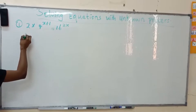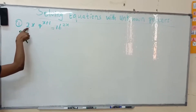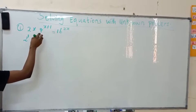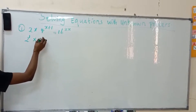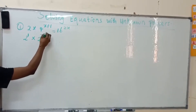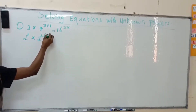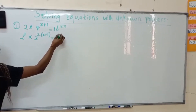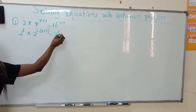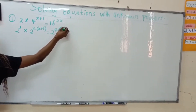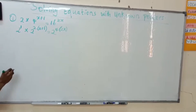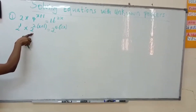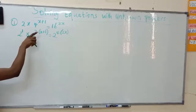We take base 2. That means 2 raised to the power of 1, and 2 raised to the power of 2 gives 4. In bracket x plus 1 equals 2 raised to the power of 4, which gives 16. Now this base and this base are the same, so what do we do? We add the powers.